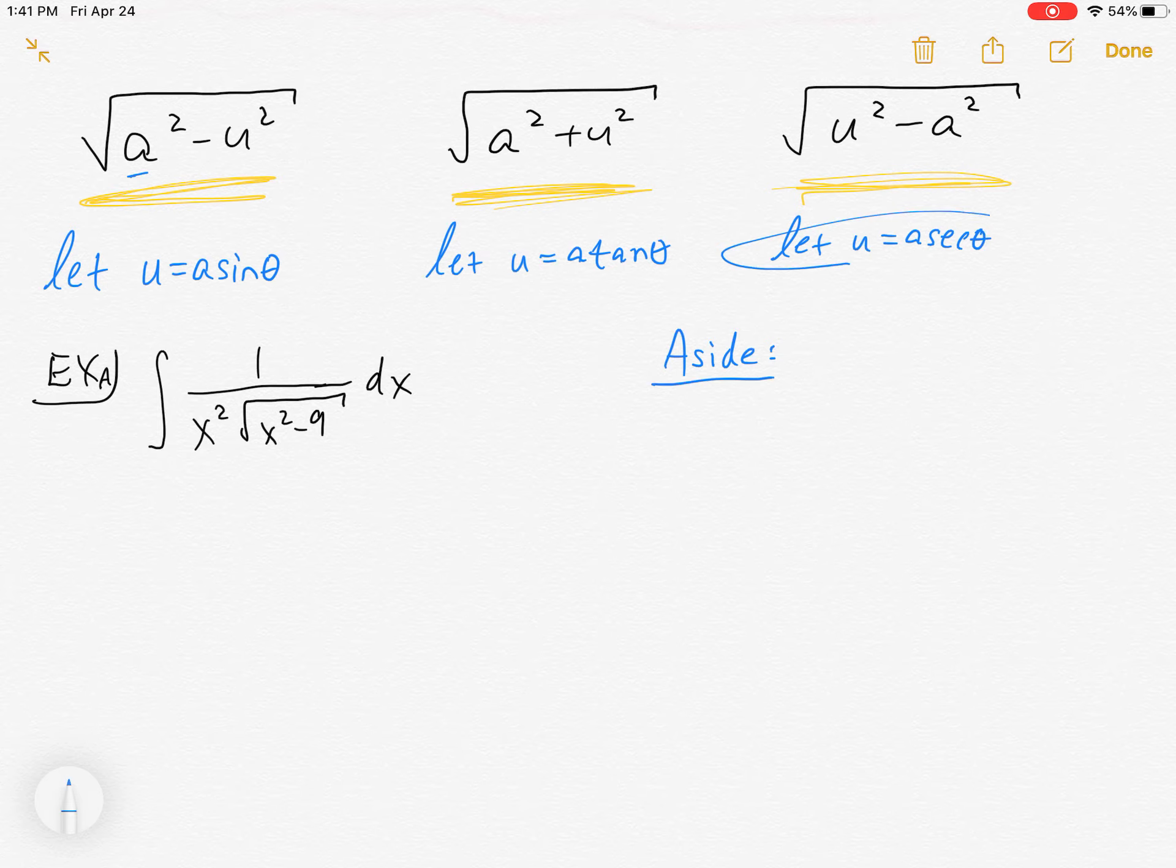So what we're going to do is do our substitution, and I usually do this off to the side. I actually call it 'aside.' I got this from my calc 2 teacher. I remember he did it this way and I really like the organization that it brings. So my substitution, we're going to use this one. What's my a? It's nine, so a is three because it's a squared, so it's 3 secant theta.